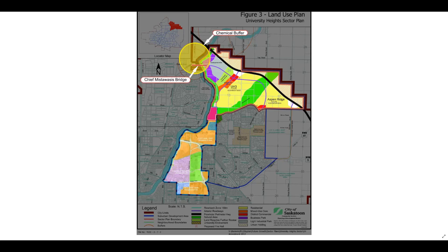For reference, this is the chemical buffer, and there's where the Chief Mistawassus Bridge is, where you have a bike path and a walking connection. The problem is it's within the chemical buffer, and public assembly is prohibited within the chemical buffer. So those are problematic.